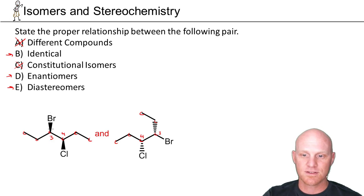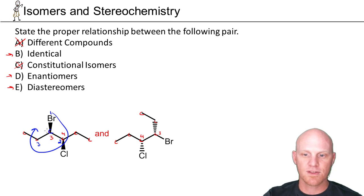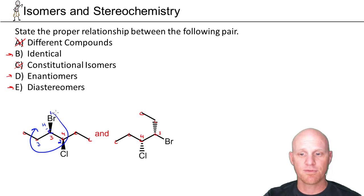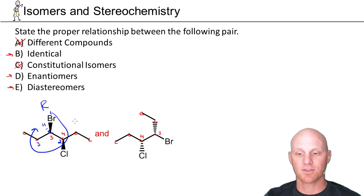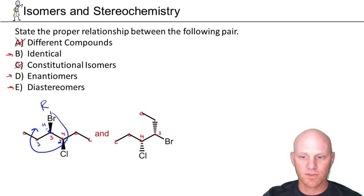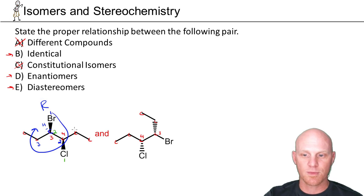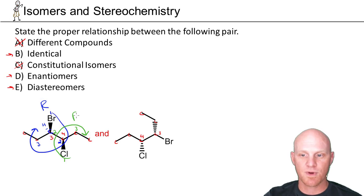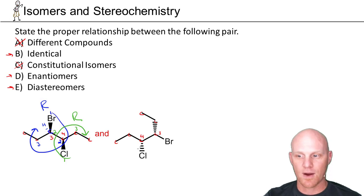For the first chiral center in the first molecule, bromine is priority one, the carbon with chlorine is two, and the adjacent carbon is three, with hydrogen not drawn in at the back as number four. That's a right-hand turn, which is R. For the second chiral center, chlorine is number one, the carbon with bromine is two, the next carbon is three, and hydrogen is in the back. A right-handed turn corresponds to R again. So the first molecule is R,R.